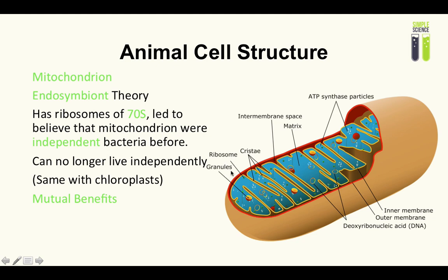Scientists believe this because the mitochondrion has its own DNA, ribosomes, and granules, which helped it sustain itself independently before being adopted and integrated into human cells. Notably, the ribosome inside the mitochondrion is 70S, whereas the ribosomes in the animal cell and the RER are 80S — this size difference led scientists to believe mitochondria were once independent organisms before being colonized.